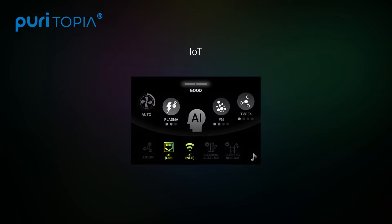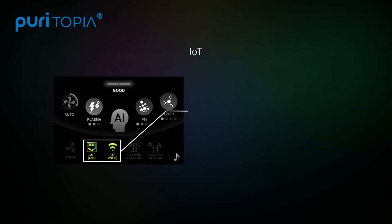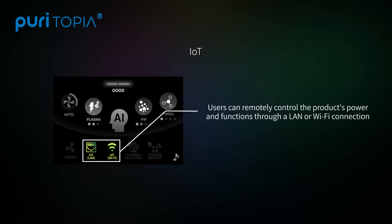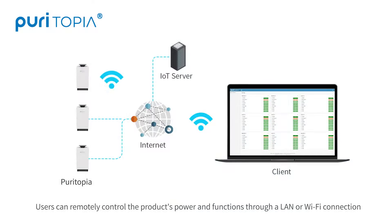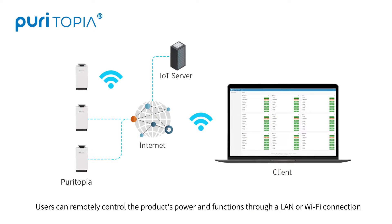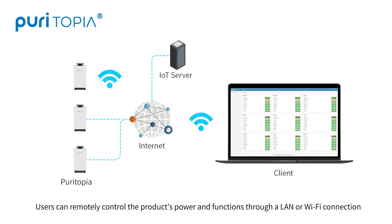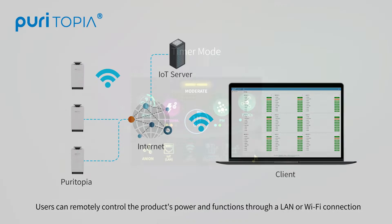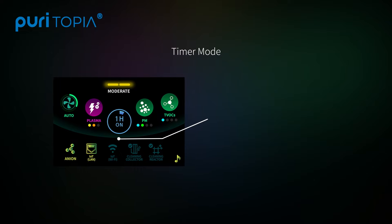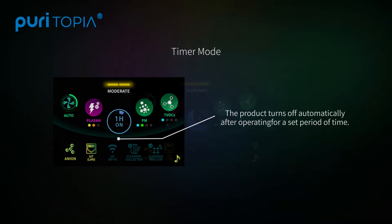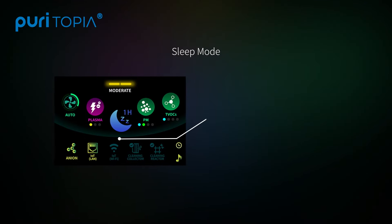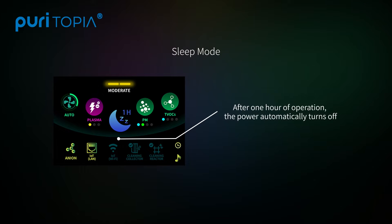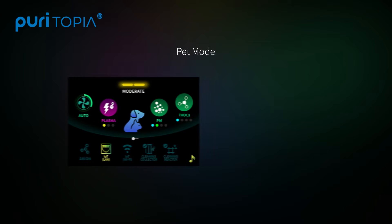Remote controlled: users can remotely control the product's power and function through a LAN or Wi-Fi connection. Additional modes include Timer Mode, Sleep Mode, and Pet Mode.